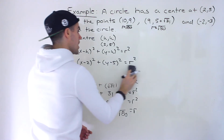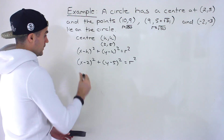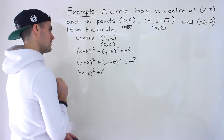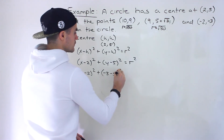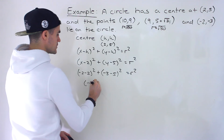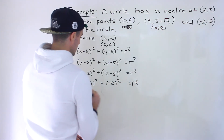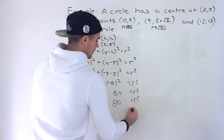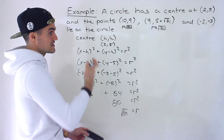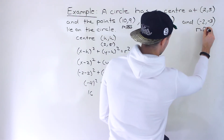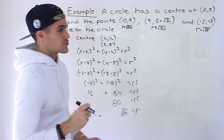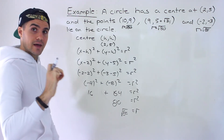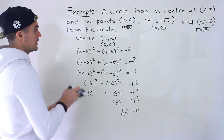Finally the third point, (-2, -3): (−2 − 2)² + (−3 − 5)² = (−4)² + (−8)² = 16 + 64 = 80. So r = √80 again. All three points give the same radius — the same distance from the center (2, 5) — and that's enough to verify that all three points lie on the same circle. That completes part A.